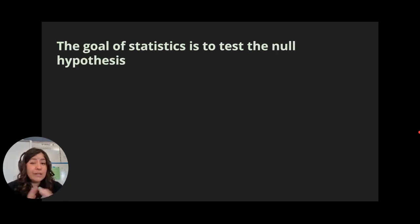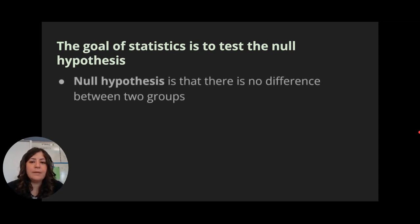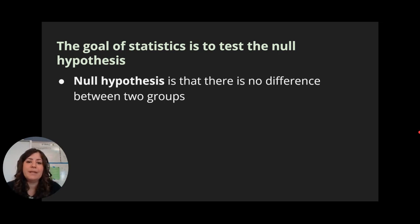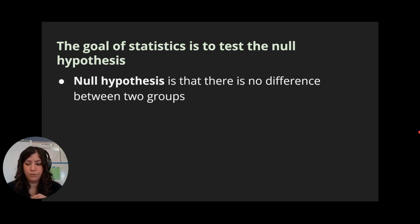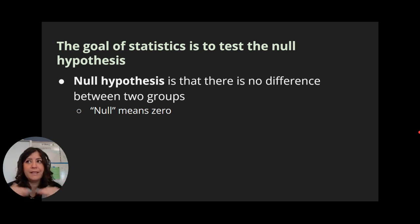The goal of all statistics and all statistical tests is to test the null hypothesis. The null hypothesis is always going to be that there is no difference between two groups. The way I like to remember this is that the word null means zero — null hypothesis, zero difference.